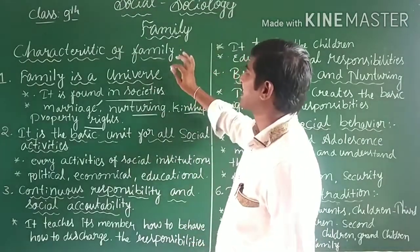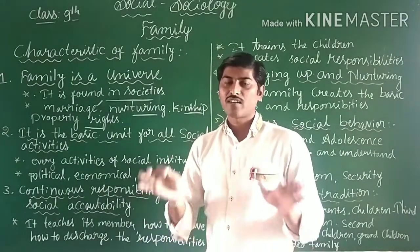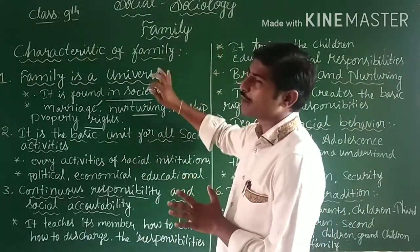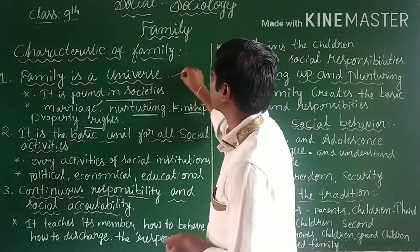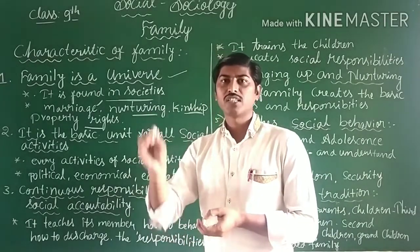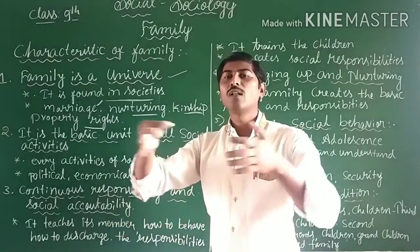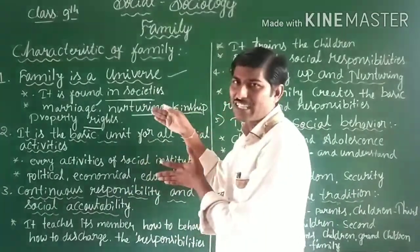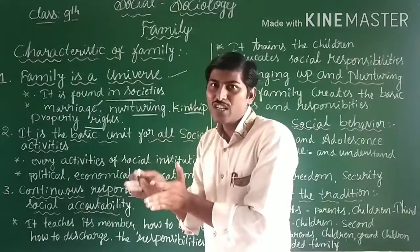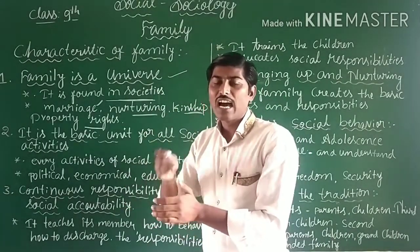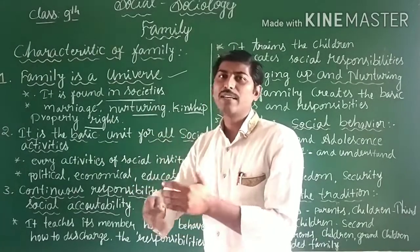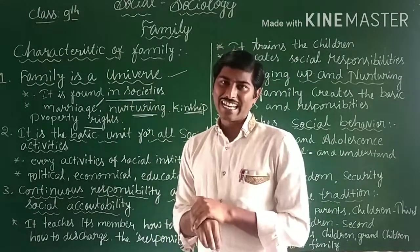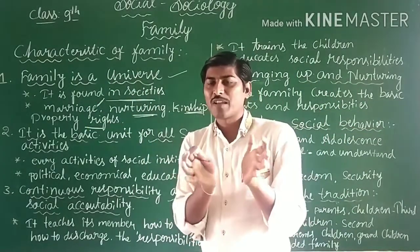By understanding the characteristics of the family, we can understand the importance of family. The first characteristic is that the family is universal — found across specific geographic areas, time, and period. All families are found in society; without society there is no family. The family regularly and continuously fixes a pattern from one generation to another generation — including marriage, nourishing a baby, kinship, and property rights.